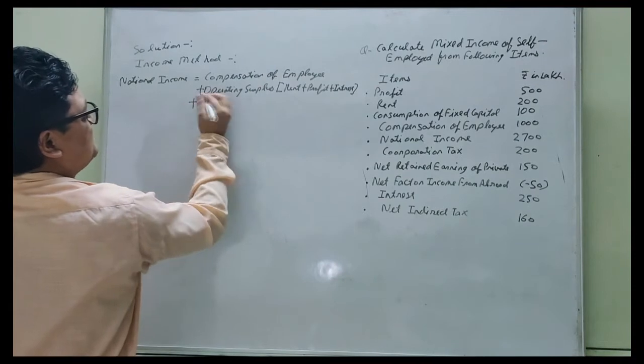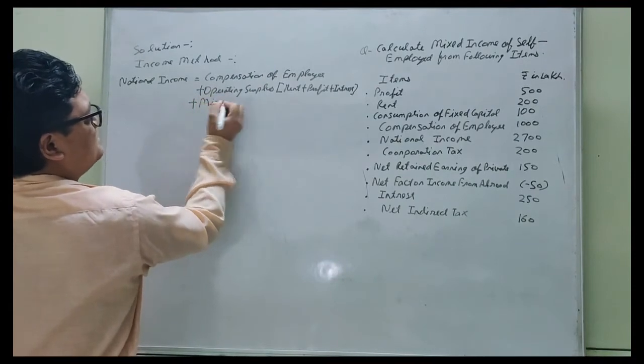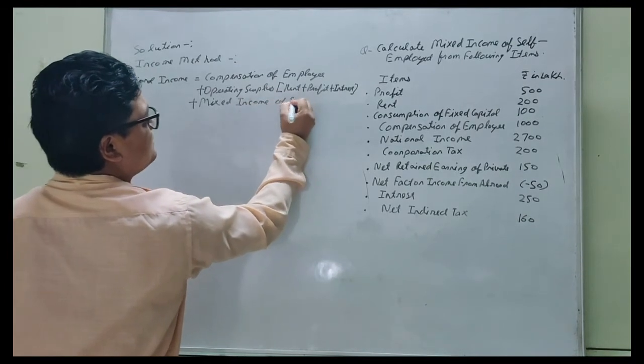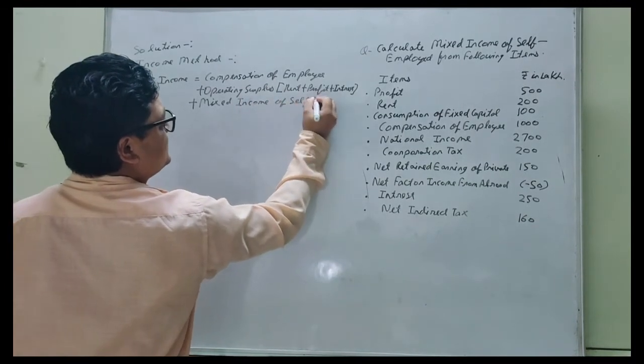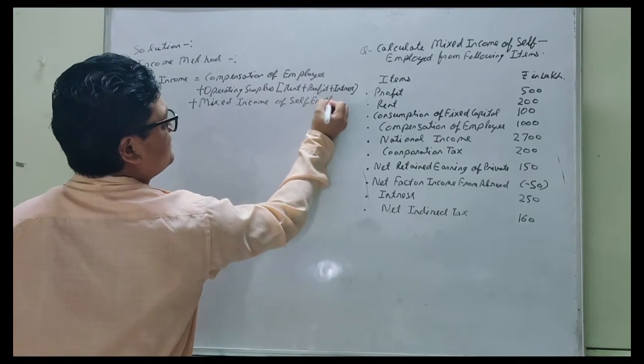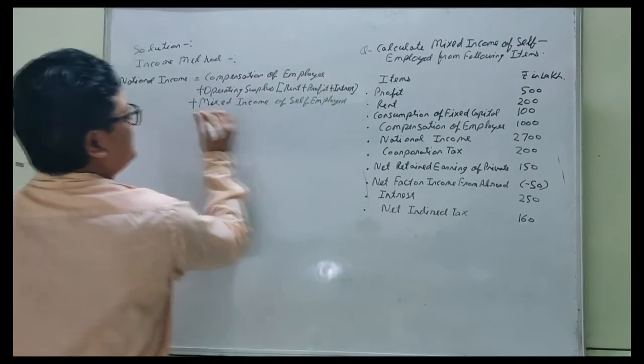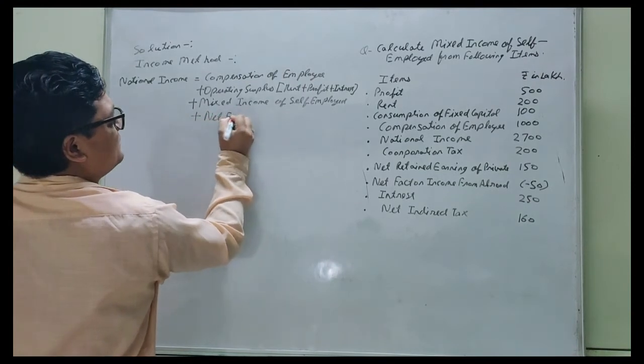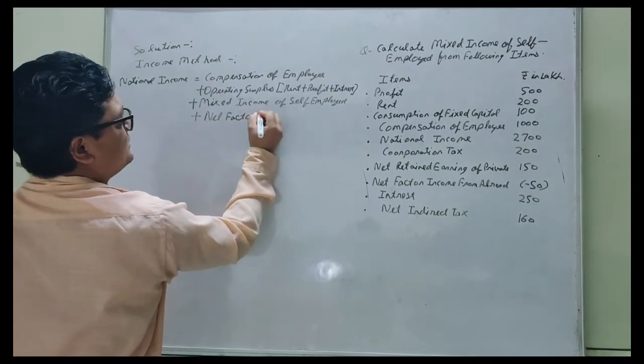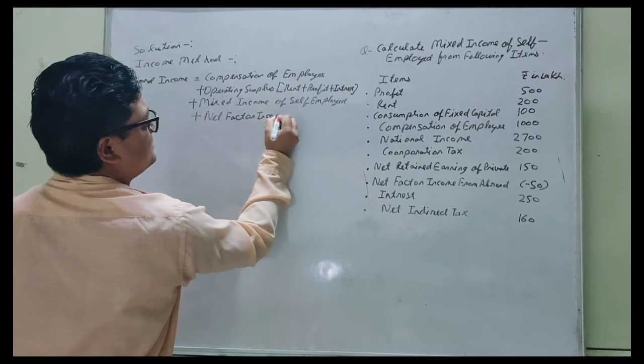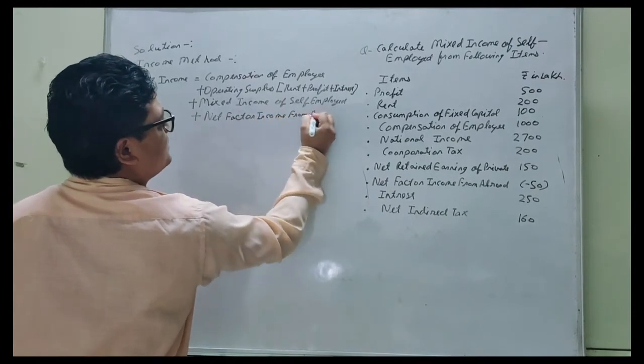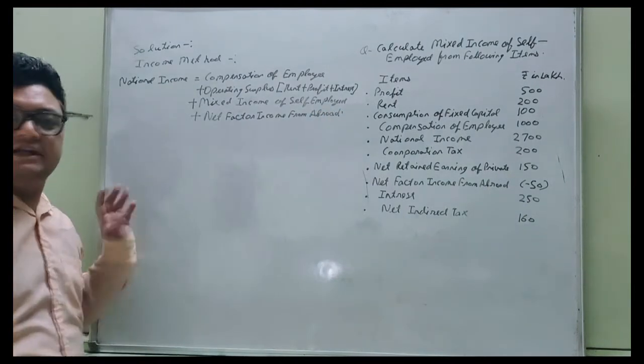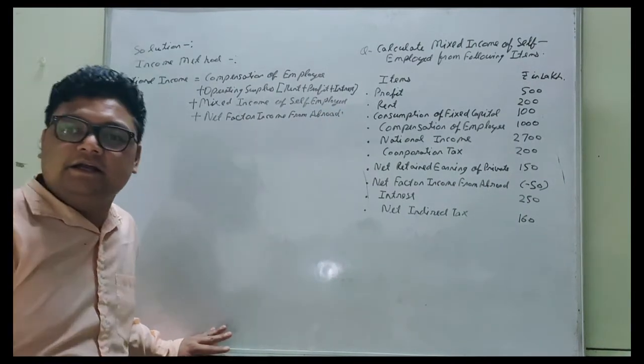Plus mixed income of self-employed, plus net factor income from abroad. This will be the formula for calculating national income by income method.